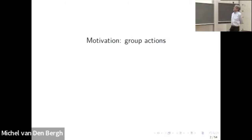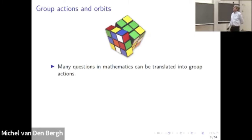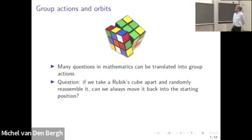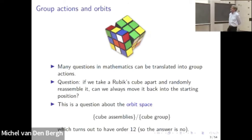I'm going to start with a little bit of motivation. Many mathematical problems can be translated into group actions and understanding orbits for a group. We all know the Rubik's cube, and an obvious question is: if we take the Rubik's cube apart and randomly reassemble it, will we be able to solve it? This can be translated into a problem of an action of a group.